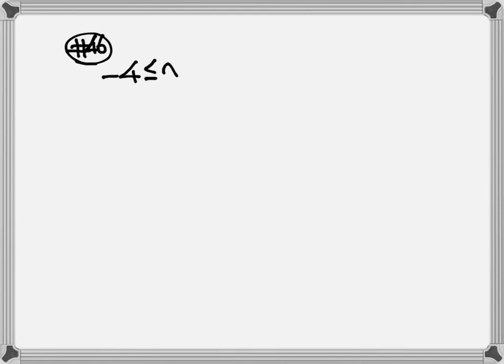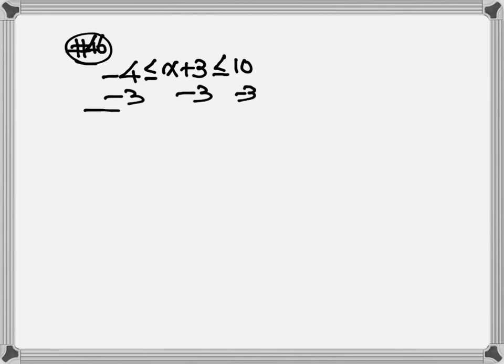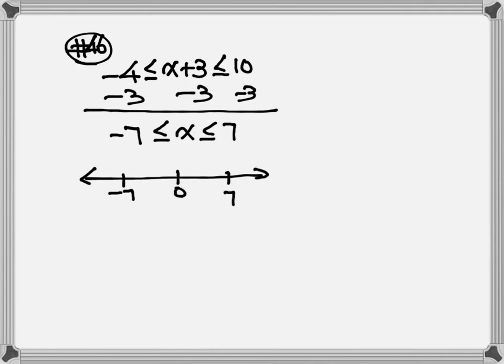Let's look at number 46: negative 4 is less than or equal to x plus 3 is less than or equal to 10. Get rid of the 3 in the middle: minus 3, minus 3, minus 3. So we have negative 7 is less than or equal to x is less than or equal to 7. Both are 7, so the spacing should be the same — 0, negative 7, and positive 7. With equal sign, bracket on the negative 7 and bracket on the 7. Draw a line in between. Interval notation: bracket negative 7, bracket 7.